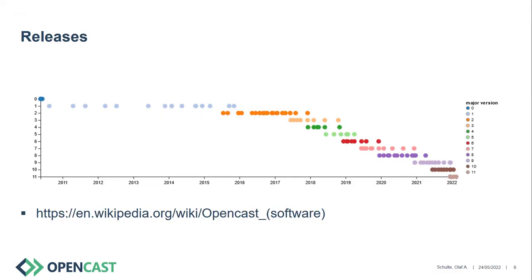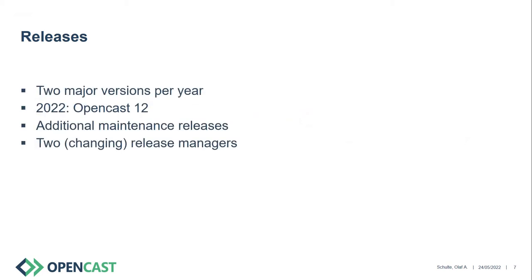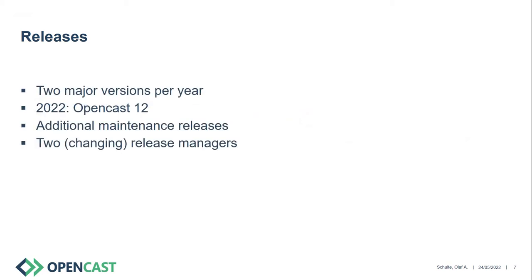If we look at the releases, you can see a pretty regular schedule, which is not surprising because we have two major releases per year. We are currently working towards OpenCast 12, which has been released throughout the last couple of days or will be released in the next couple of days, depending on when you watch this video.